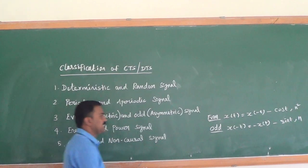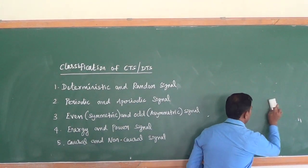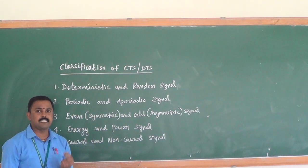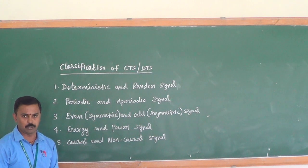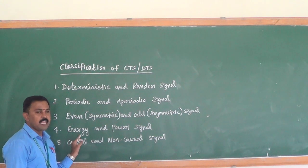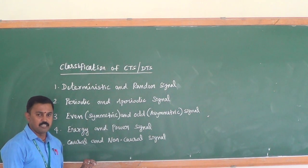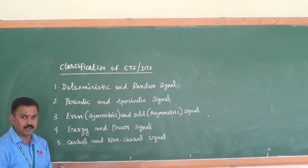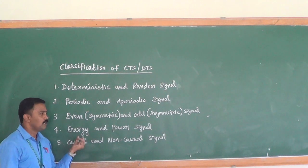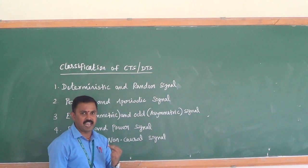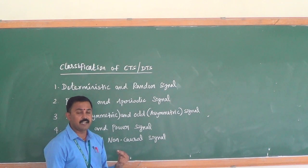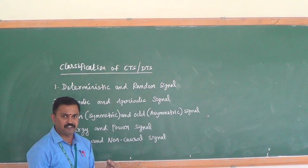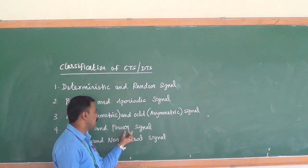Fourth, energy and power signals. An energy signal has finite energy and zero average power. A power signal has finite power and infinite energy. We use formulas to calculate energy and power values. If the energy value is finite and power is zero, the signal is an energy signal. If the power is finite and energy is infinite, it is a power signal.